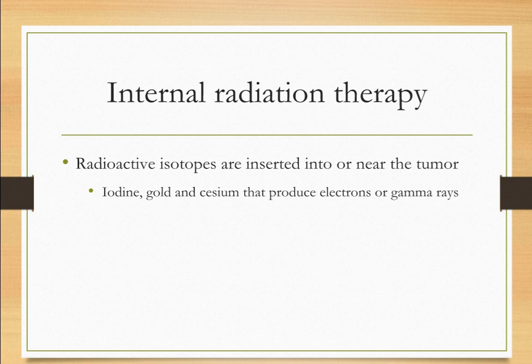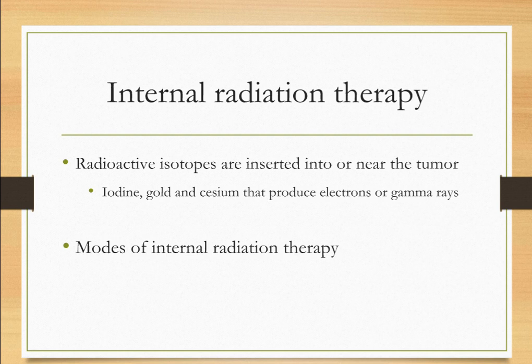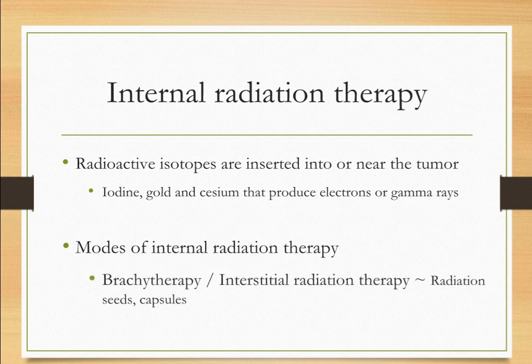Radioisotopes of iodine, gold, and cesium are commonly used, which produce gamma rays or electron beams. Internal therapy using solid media like capsules, seeds, or ribbons is called brachytherapy or interstitial radiation therapy, where the isotope is inserted near or into the tumor site, working similarly to external beam therapy as a local treatment. The second type is systemic radiotherapy, where liquid radioactive isotopes are injected into the blood or given orally, and the substance spreads throughout the entire body to locate and destroy cancer cells.